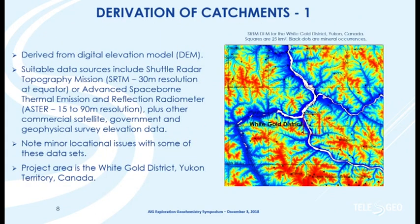I'll step through some of the process using the White Gold District in the Yukon, Canada as an example. We're looking at a DEM derived from SRTM data. One thing you'll notice is that in detail, the derived hydrology from the DEM is not exactly matching the published hydrology from the Yukon government. With different DEMs, you do have these locational differences that are going to affect how you generate your catchments.